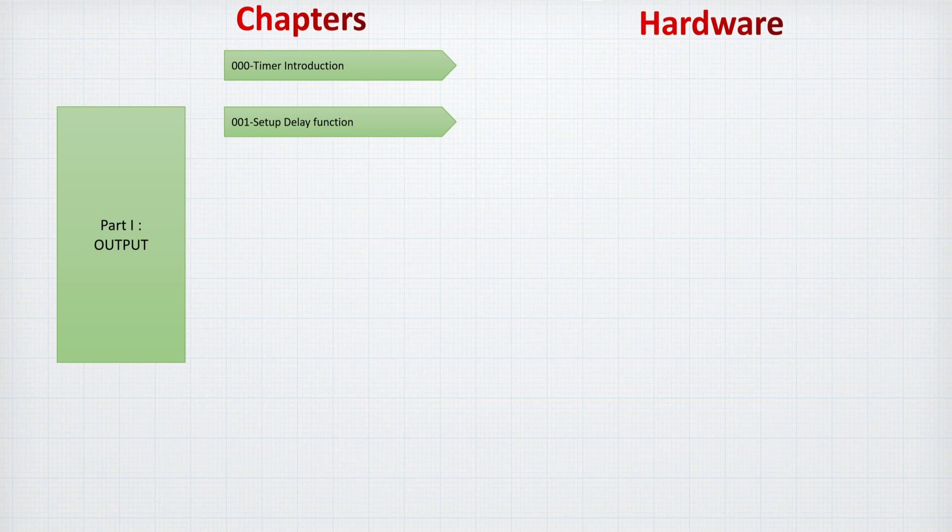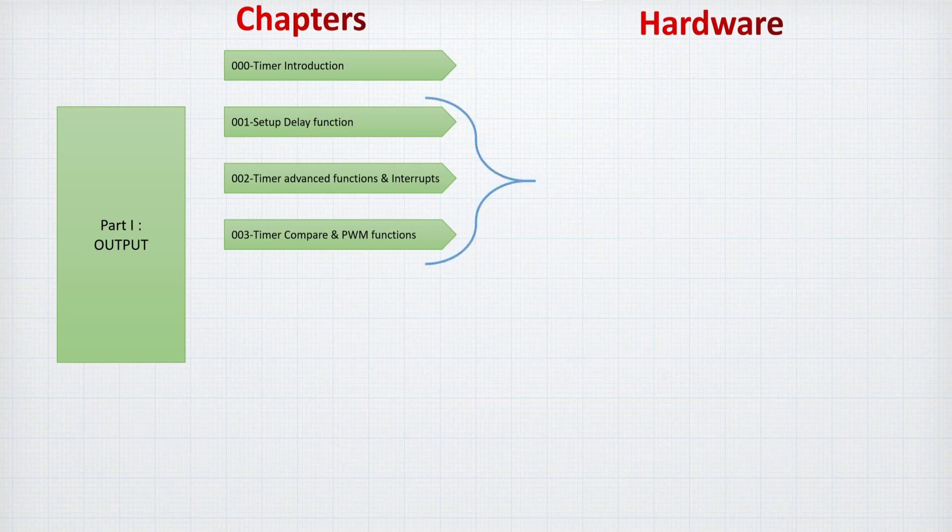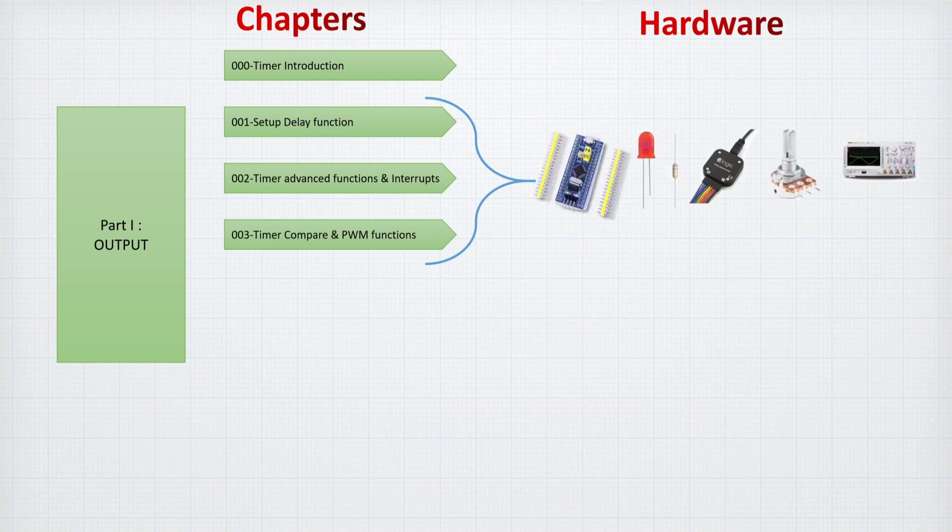For that, we are going first to set up a delay function using a timer. After that, we are going to make an advanced function and use also interrupt with timers, which can be very interesting. Then we will use the compare and PWM functions. All these three videos will be using some hardware like the STM32F1, LED and resistor, and logic analyzers.